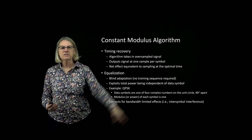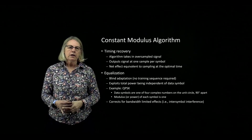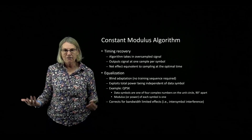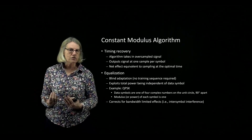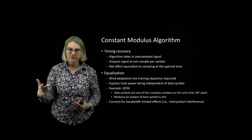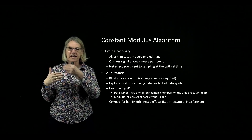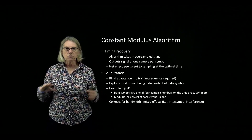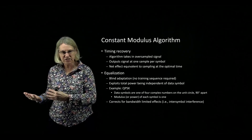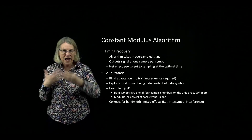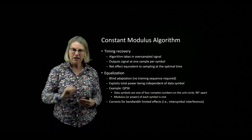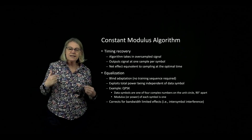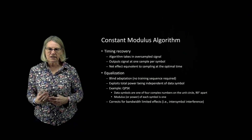The constant modulus algorithm is used for timing recovery and equalization. The algorithm takes in an oversampled signal and outputs one sample per symbol. Inside the algorithm, something forces the output to produce the ideal sampling time, making it effectively equivalent to having a timing recovery circuit with optimal timing. At the same time as this adaptation allows timing recovery, it is also performing blind equalization with no training sequence required.